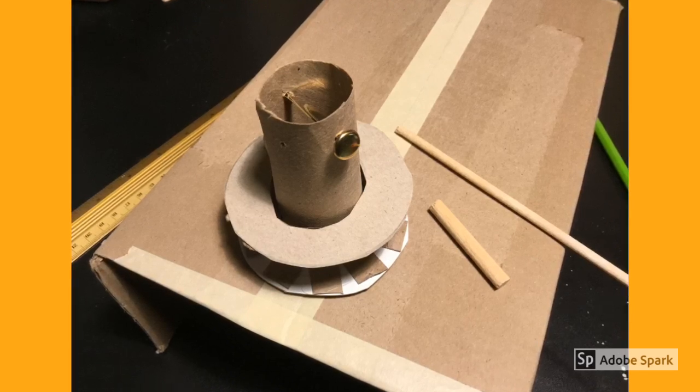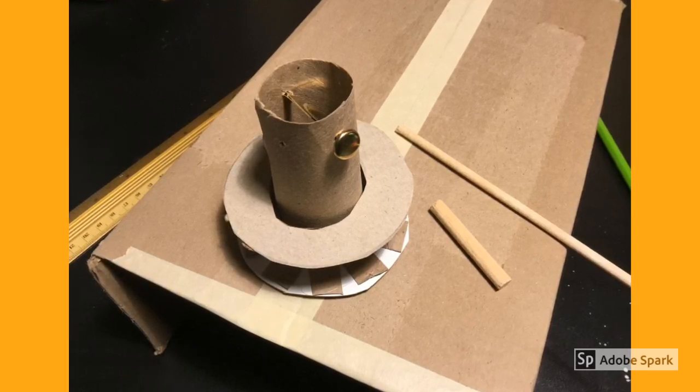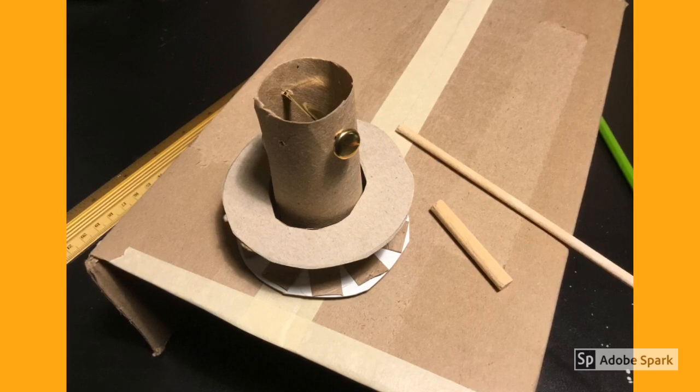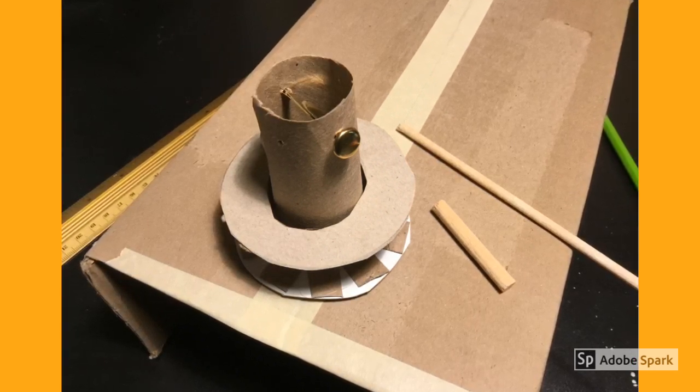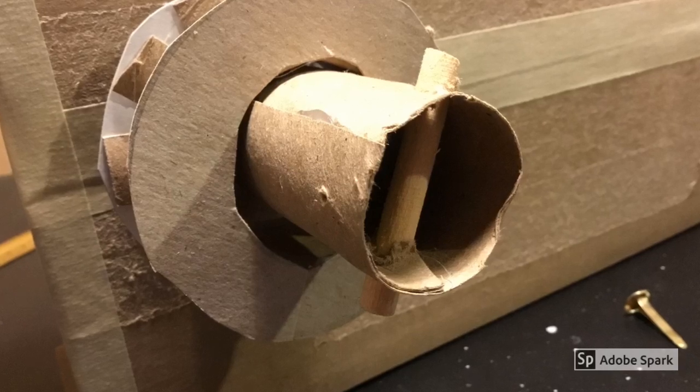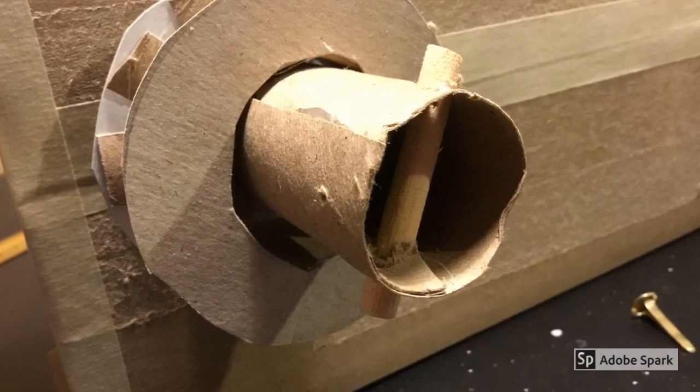So that your pulley does not fall off the axle you just created, consider putting a brass fastener, dowel, or even an elastic band around the end. This way, as your pulley rotates, it won't fall off the axle.